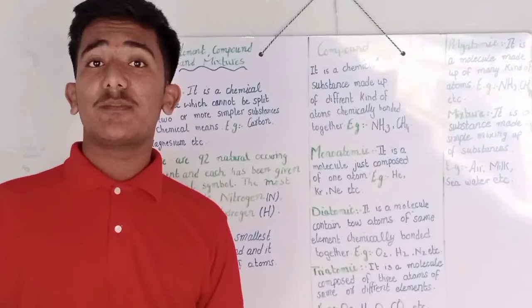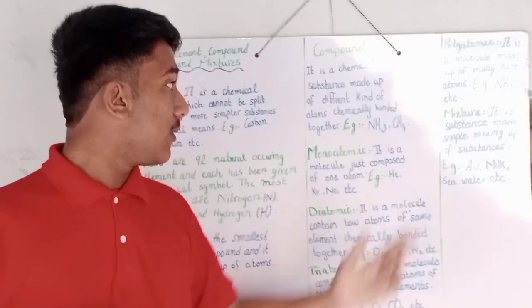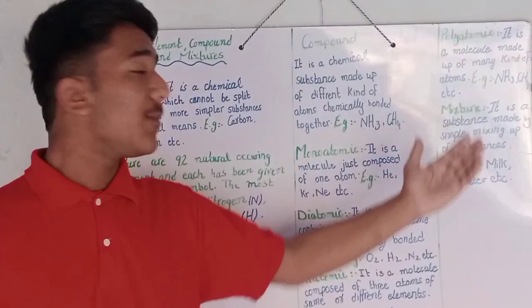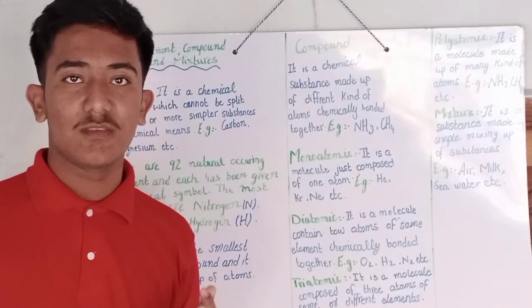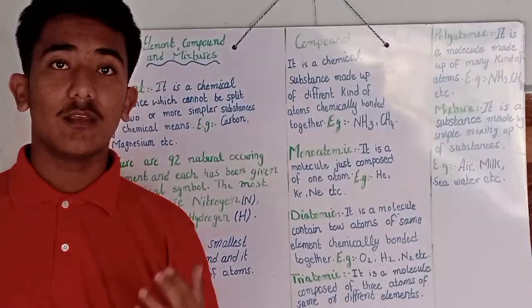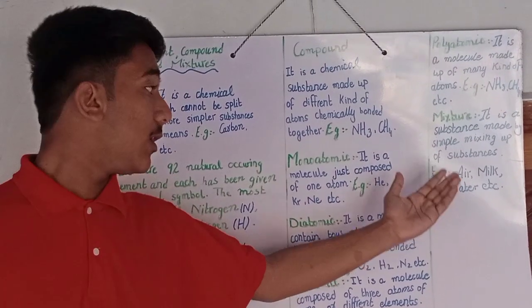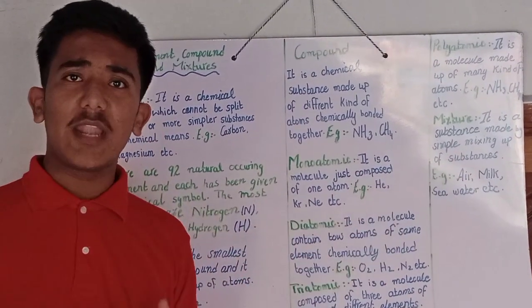Now, I will explain you the definition of mixture. Mixture, it is a substance made by simple mixing of two substances. It is an impure substance. For example, air, milk, seawater, lime water, and etc.